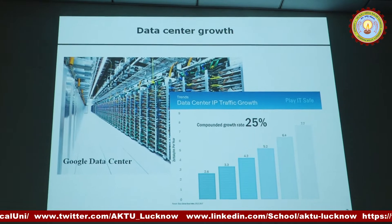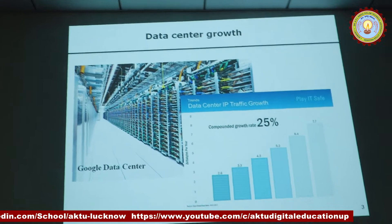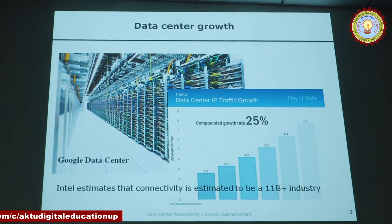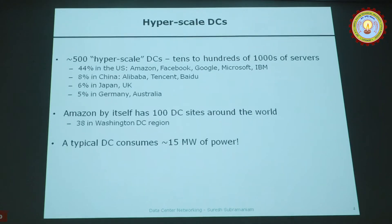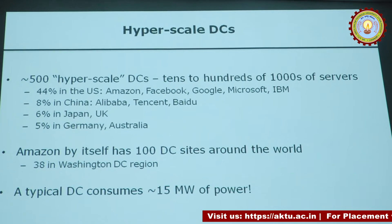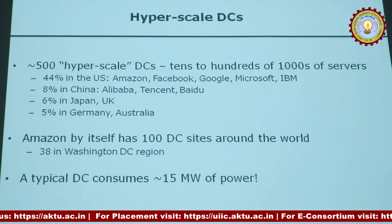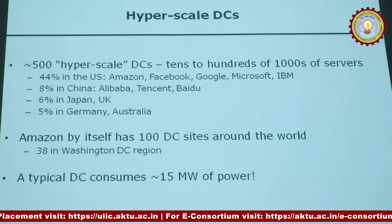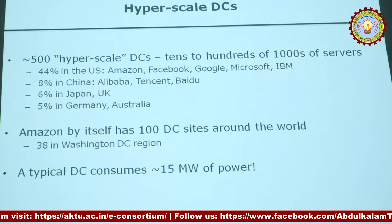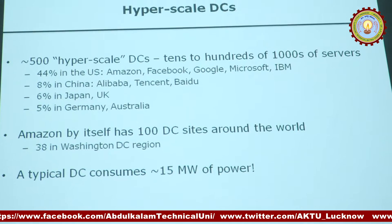Traffic inside data centers is growing in an almost exponential manner. Intel estimates that the connectivity industry within data centers is over 11 billion dollars. Currently there are about 500 hyperscale data centers in the world. The dominant companies include Amazon, Facebook, Google, Microsoft, IBM, and the three big Chinese companies — Alibaba, Tencent, and Baidu — running data centers with hundreds of thousands of integrated machines.